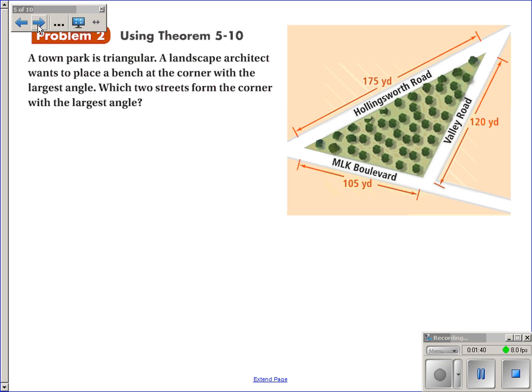So the longest side would be this one, so across from it would be right here is where the park bench should be placed. So the question asks, which two streets form that corner? And the answer would be Martin Luther King Boulevard and Valley Road.